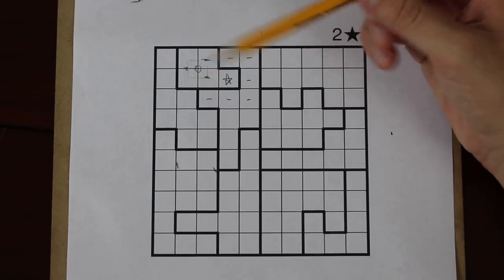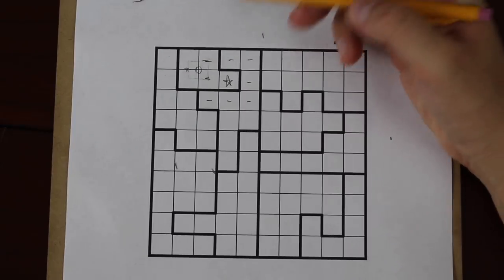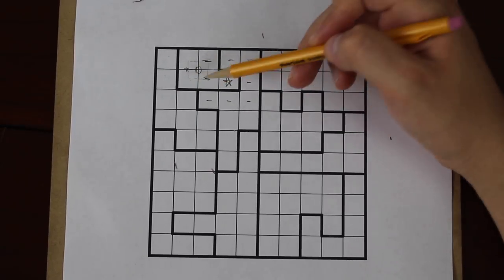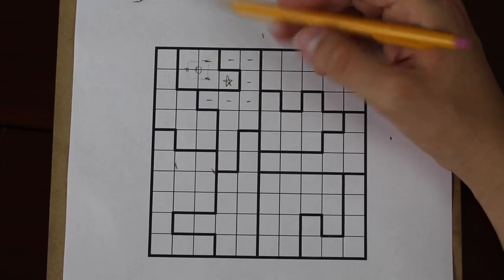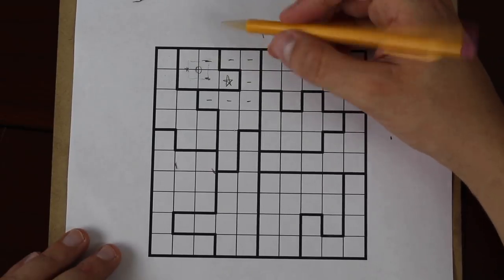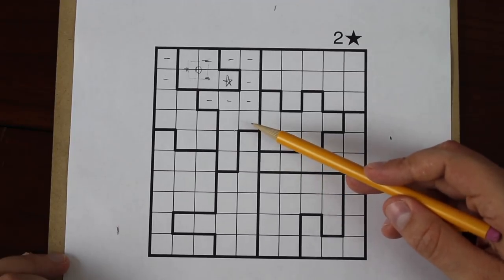Now if you think about it, if the star is here, there can't be stars in any of these four squares. And if the star is here, there also can't be stars in any of these four squares. Otherwise they would be touching. So we can also mark off these two over here.